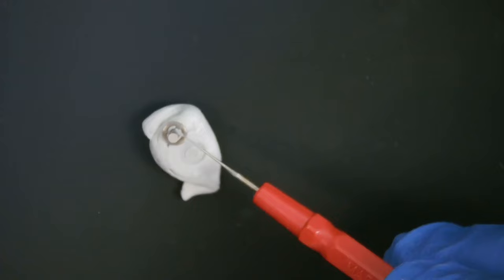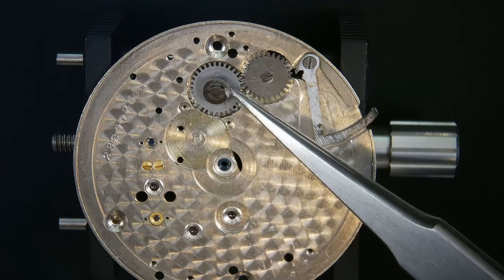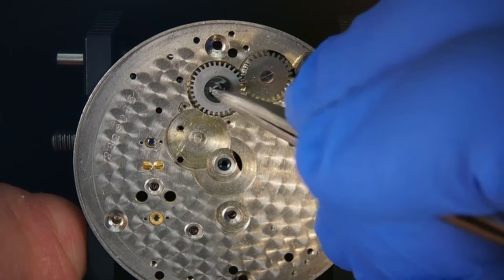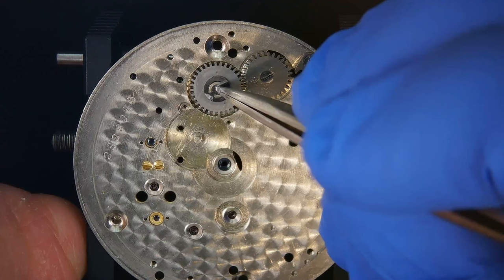It slides over the intermediate setting wheel and protrudes through the movement side of the bridge. And when actuated, the pin meshes the teeth of the setting wheel with the minute wheel.